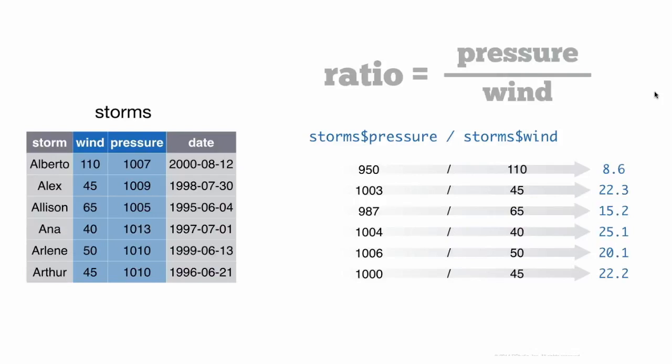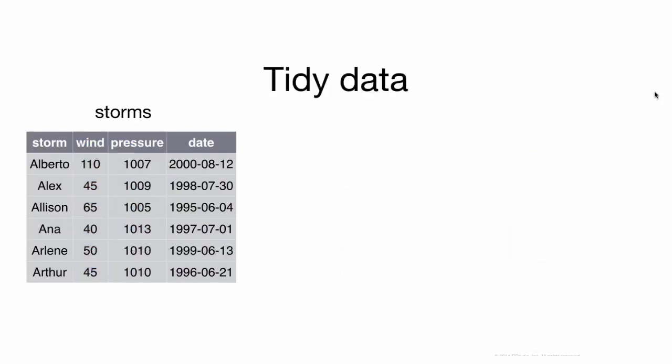We wouldn't want to divide the pressure of Alberto by the wind speed of Alex — that's not a meaningful quantity. We want to keep the pressure of Alberto with the wind of Alberto, and the pressure of Alex with the wind of Alex. The structure of the storms data frame makes that happen automatically, taking advantage of R's element-wise operations. So if you put your data into that structure before you begin analysis, you'll have a much quicker, more efficient experience.